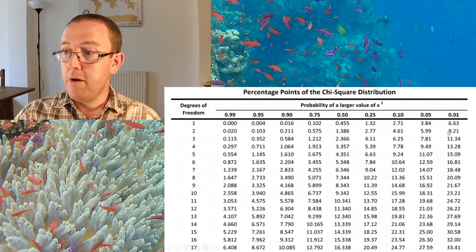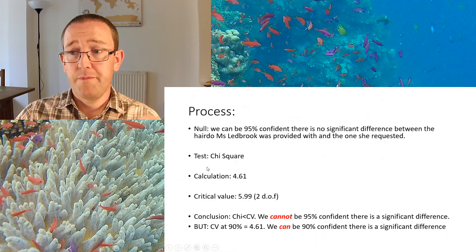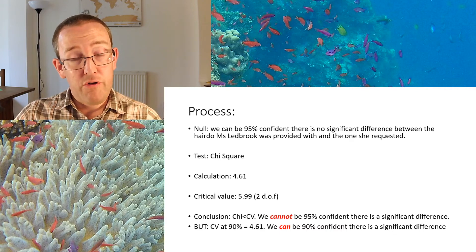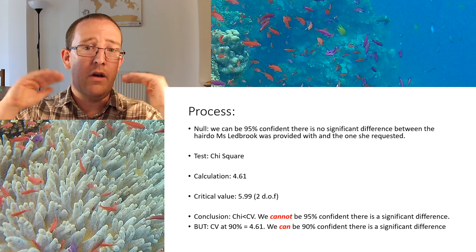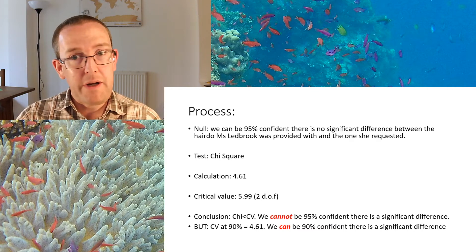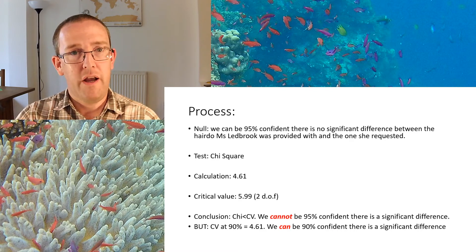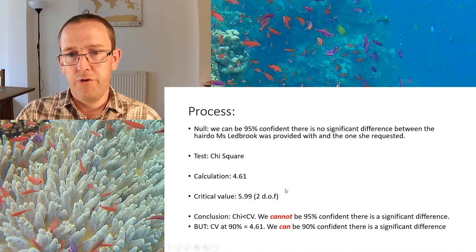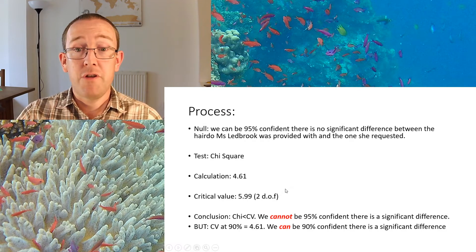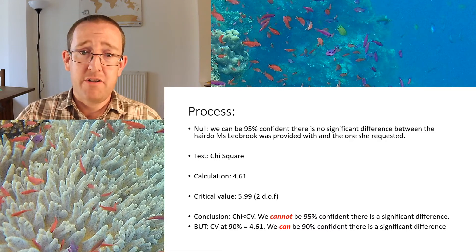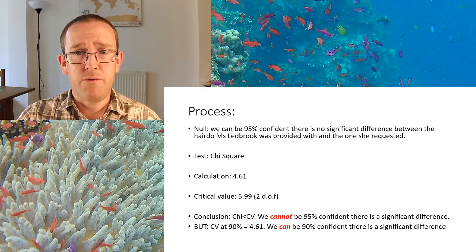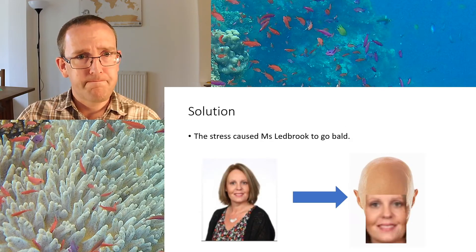The calculation came out at 4.61. The critical value at two degrees of freedom is 5.99. Our calculation is below 5.99, so we cannot be 95% confident there is a significant difference — we accept the null hypothesis at that confidence level. However, it's worth noting that 4.61 matches the 90% confidence threshold, so while we can't be 95% confident of a significant difference, we can be 90% confident. It's a close-run thing. She's probably not going to kick off with that hairdresser, but she'll probably never use them again.